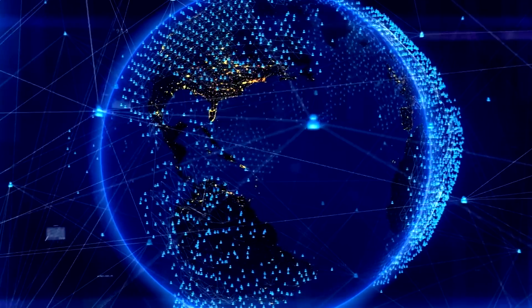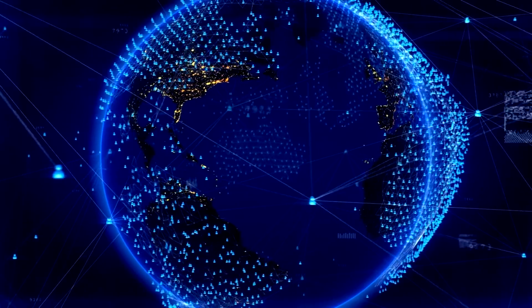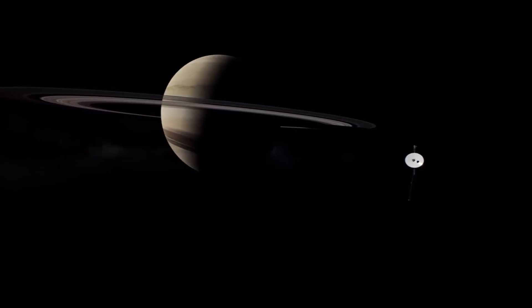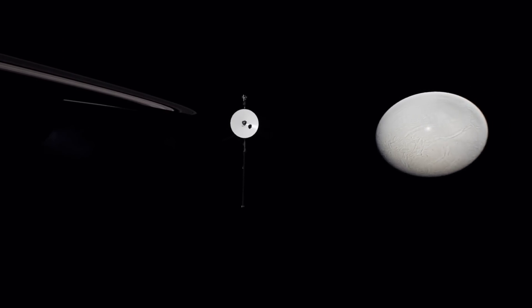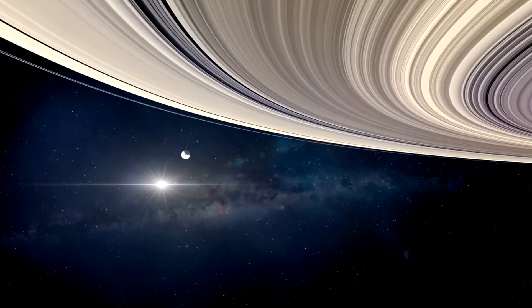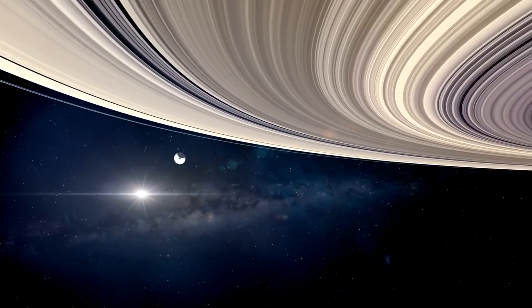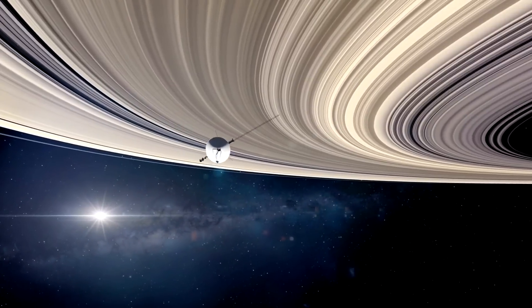One of the most poignant aspects of the Voyager mission is the realization that these spacecraft will eventually cease to communicate with Earth. As Voyager 1 travels further into interstellar space, the distance between it and Earth increases by about 17 kilometers per second, making it increasingly difficult to maintain a strong signal. Eventually, the spacecraft will reach a point where it can no longer transmit data back to Earth, and its journey will continue in silence.